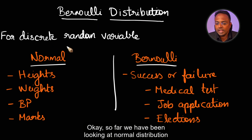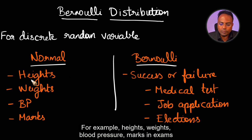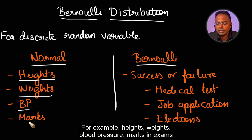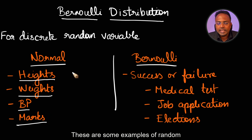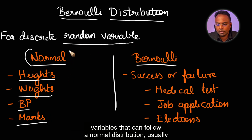So far we have been looking at normal distribution — random variables that are continuous in nature. For example, heights, weights, blood pressure, marks in exams. These are some examples of random variables that can follow a normal distribution.